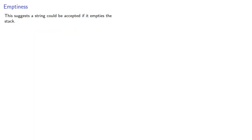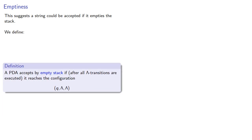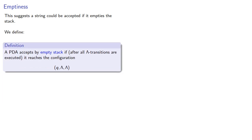Meanwhile, an unbalanced string would take us through: open parenthesis gets dropped onto the stack, another open parenthesis gets dropped onto the stack, a close parenthesis takes care of one of those — but now we have an empty string but not an empty stack. This suggests a string could be accepted if it empties the stack. So we introduce the following definition: a pushdown automaton accepts by empty stack if, after all lambda transitions are executed, it reaches a configuration of some state with empty string and empty stack. We'll take a look at the implications of this new type of acceptance next.